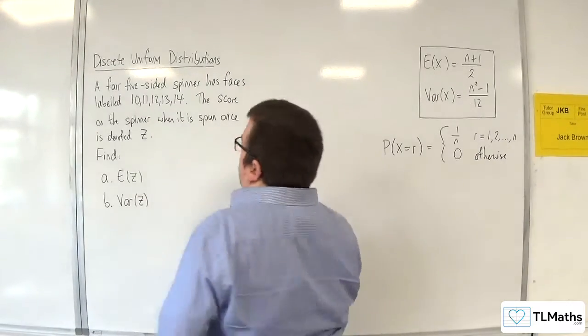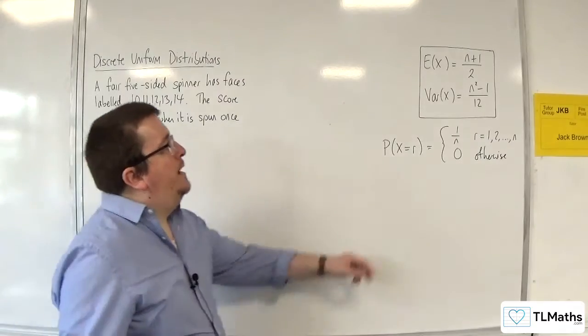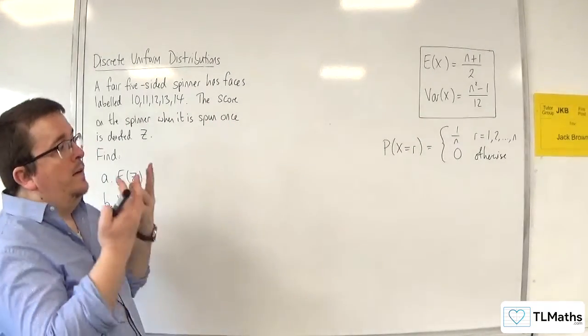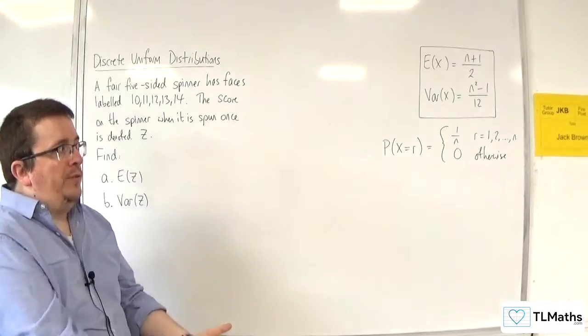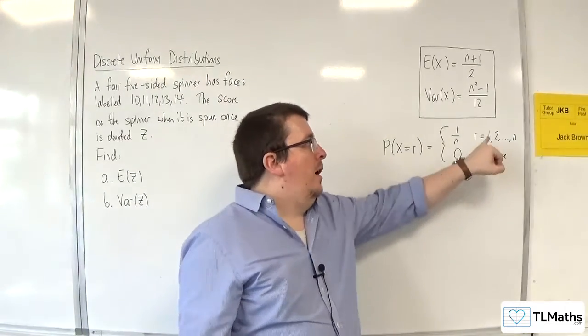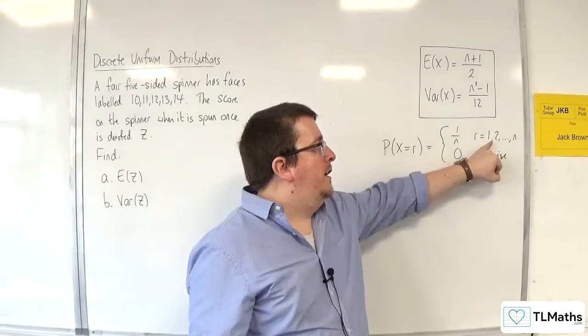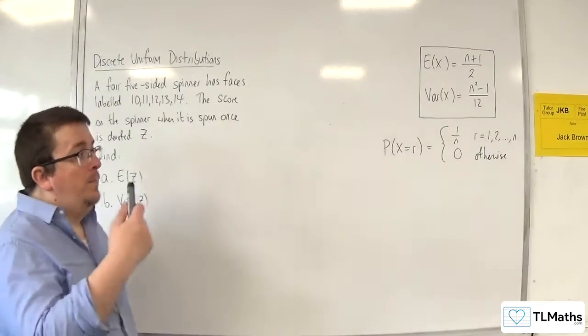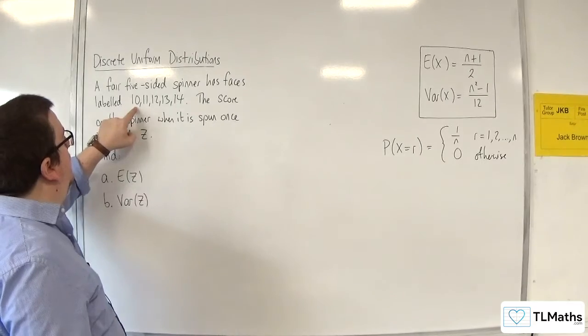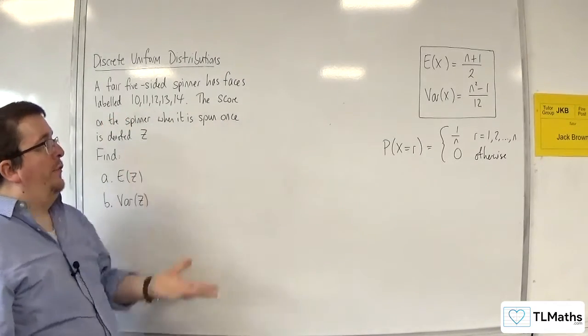Now, the problem is that I derived E of x and var of x, these formulas given to you in the formula booklet, from the starting position of this uniform distribution. So r is starting at 1 and going up in 1s up to n. But now, in our example, r is starting at 10 and going up in 1s to 14.